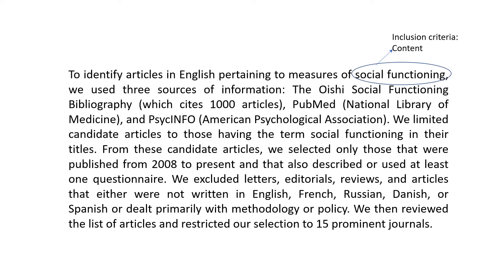In today's video I'm trying to explain how researchers go about justifying those criteria. Look at the first point: the term 'social functioning.' This is a type of content criteria used to include or exclude articles. Here they used 'social functioning' as a content inclusion criteria — they included articles where the term 'social functioning' was mentioned.